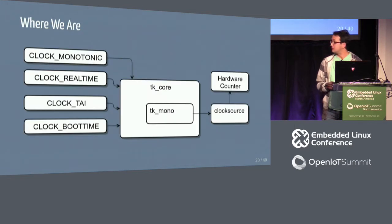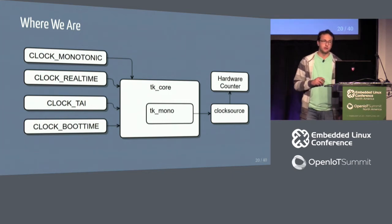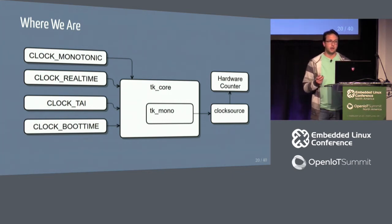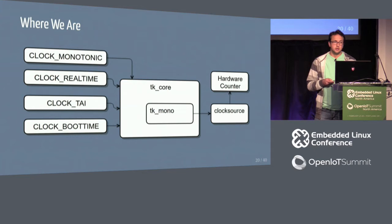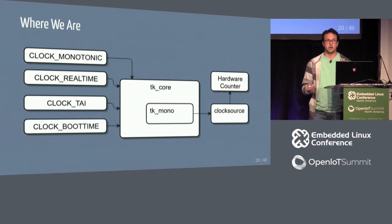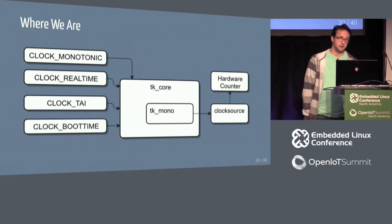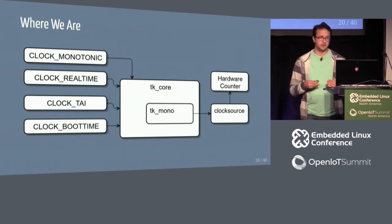Here's a block diagram of where we are with clock source and maintaining timelines. CLOCK_MONOTONIC, CLOCK_REALTIME — all these clocks go into the TK core structure, which has these monotonic bases inside, which then reads the clock source, which actually reads the hardware counter to finally tell you what time it is. There are multiple layers involved just to figure out what time it is.